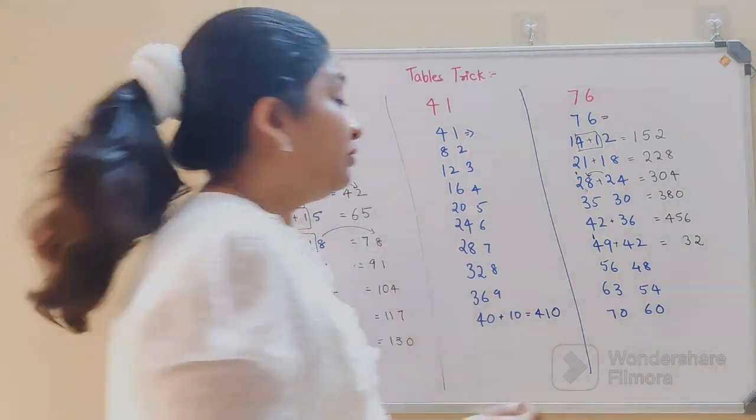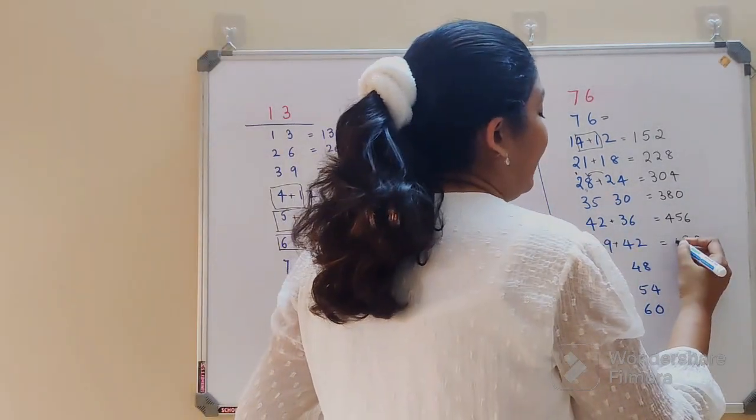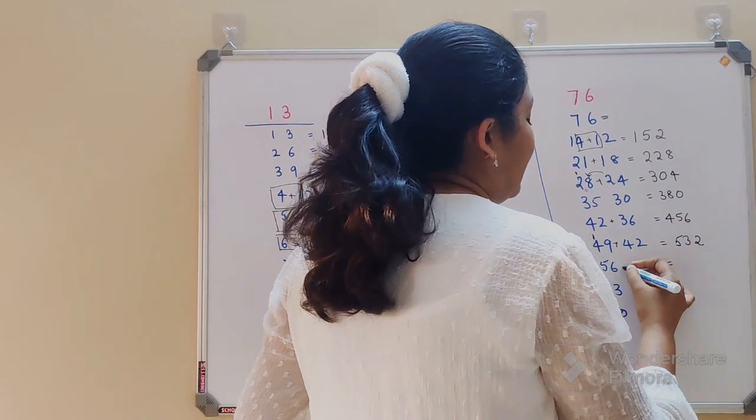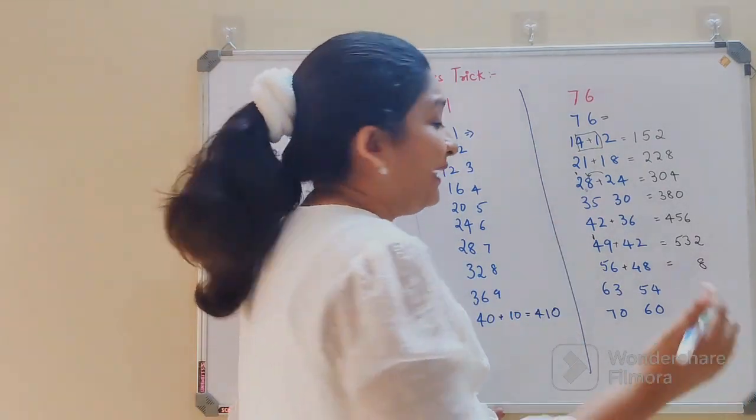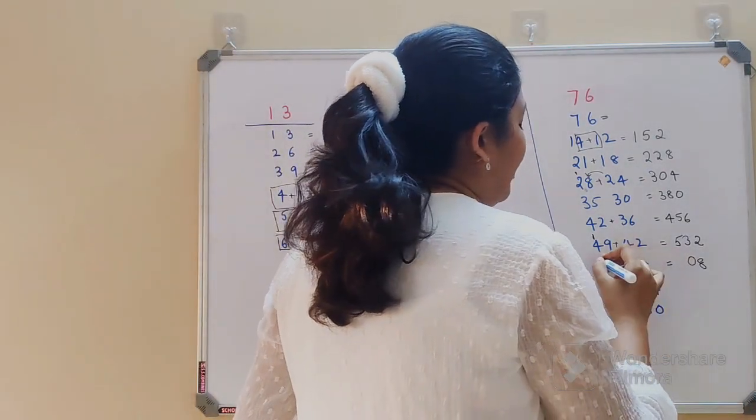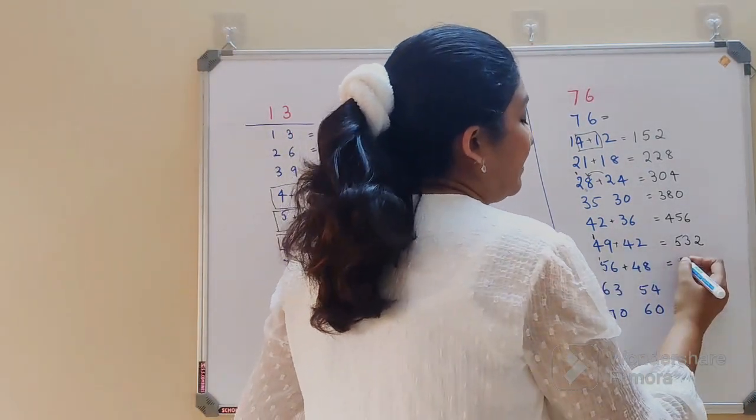Now this is again similarly, you have 8 gets added. 6 plus 4 is 10, so you take a 0 and 1 to this. So then 5 plus 1 gets you 6.